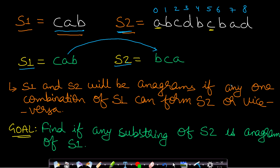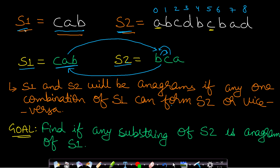So s1 and s2 will be anagrams if any one combination of s1 can form s2 or vice versa — if you can convert s1 to s2 by juggling the letters, or convert s2 to s1 by just changing the places of the letters. This means our problem gets converted to: find if any substring of s2 is an anagram of s1.